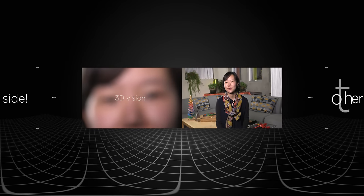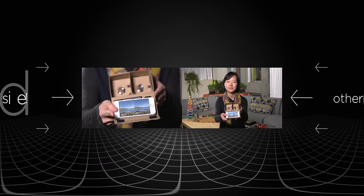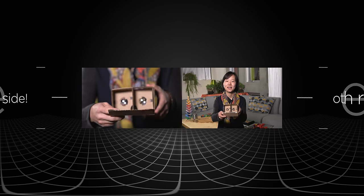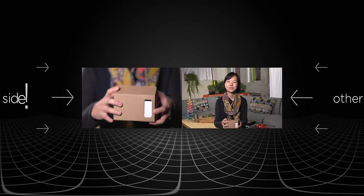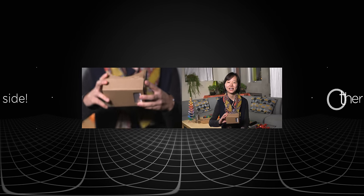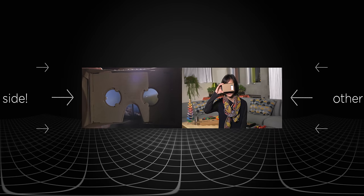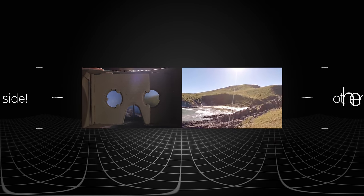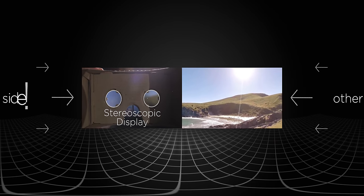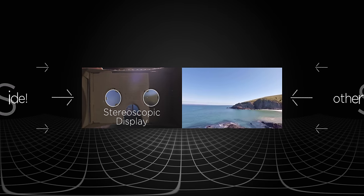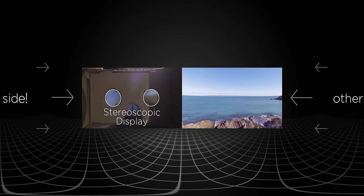Instead of one picture covering the whole screen, this video has two different images made for each eye that are ever so slightly offset. The cardboard box holds the image in the perfect distance to my eyes and divides the image into two so that each eye focuses on the image. This type of video, the stereoscopic display, simulates what our eyes do naturally and fools our brains into thinking that it's looking at a 3D image by creating a sense of depth.